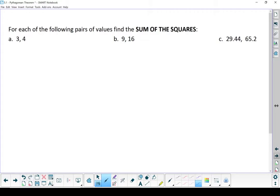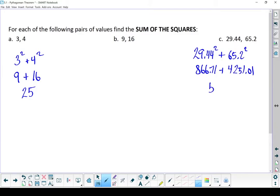Now we're still working on some pre-skills here. If you want to know what the sum of the squares are, well, square each one and add them together. So the first one, 3 squared plus 4 squared. 3 squared is 9. 16 plus 9 is 25. I'm going to jump to the last one. 29.44 squared plus 65.2 squared. 29.44 squared is 866.71, and 65.2 squared is 4,251.01. Add those two together, and we end up with 5,107.75.